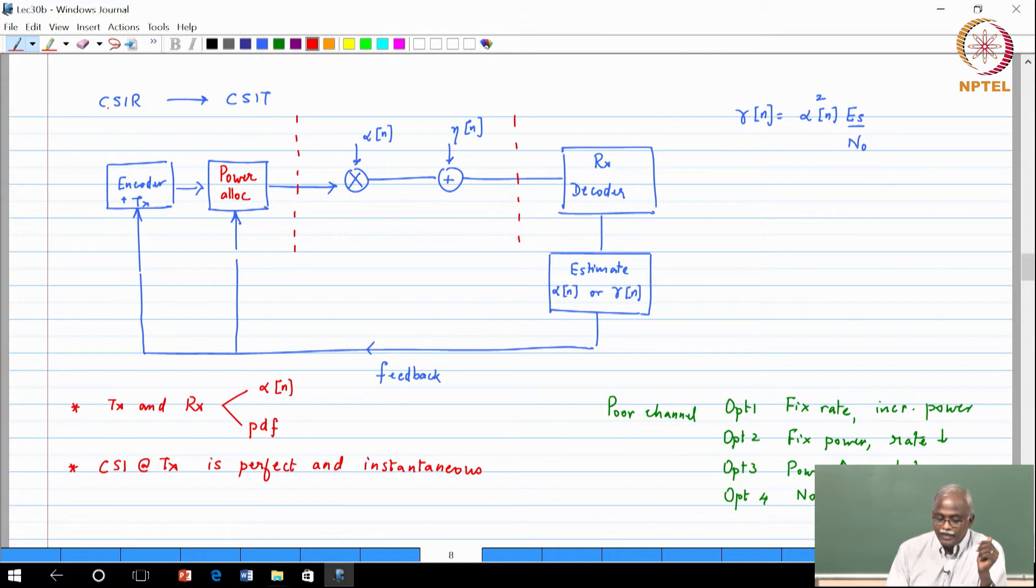Basically, who has information about the channel state? The receiver. The receiver has to give the information to the transmitter. At the receiver you estimate what is your channel SNR or channel state and that information will get fed back.